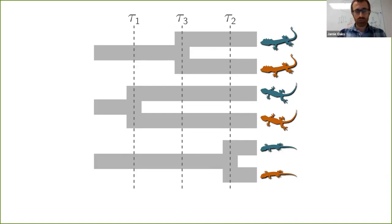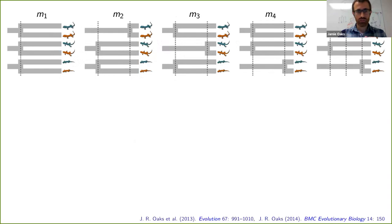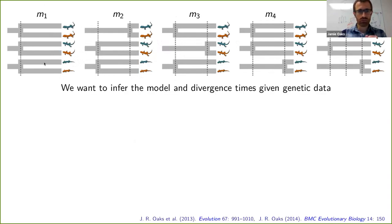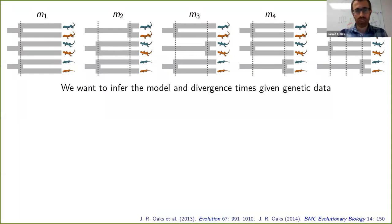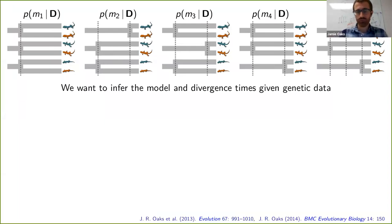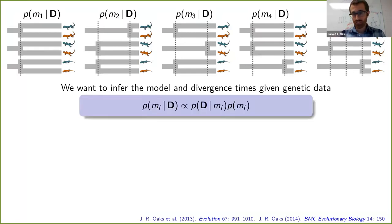What we want to be able to do is infer which of these five possible models best explains the genetic data we have sampled from the populations of organisms, and more specifically, make probability statements about these models. We can do that if we take a Bayesian approach: the posterior probability of a given model is proportional to the likelihood of that model times the prior probability of that model.